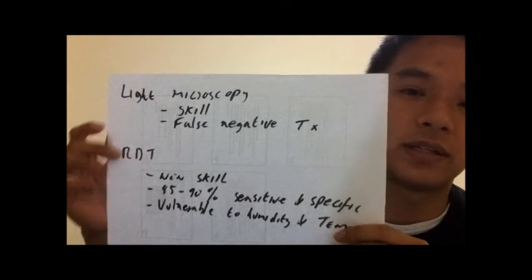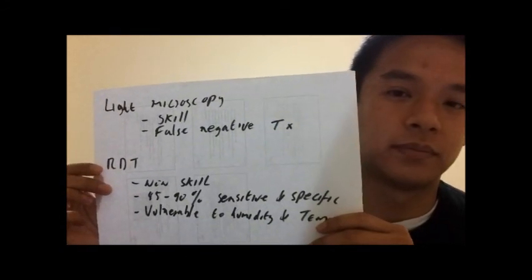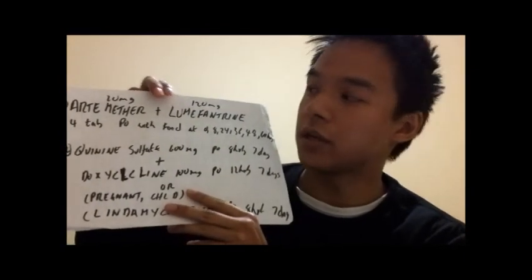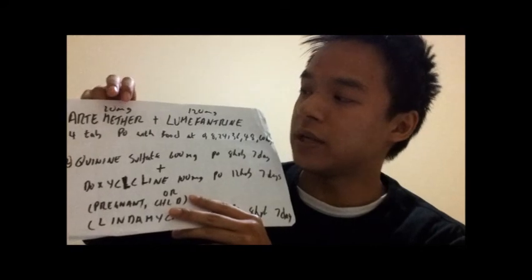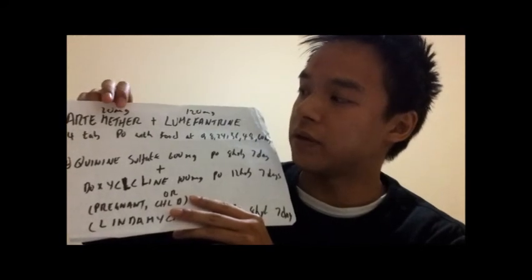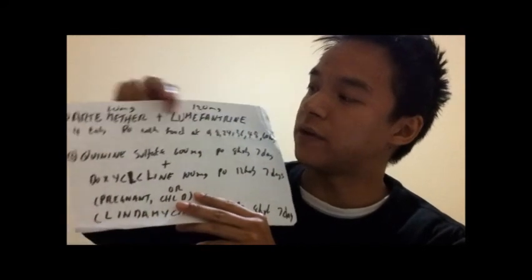Those are the two diagnostic tests you need to know about for malaria. Now I'm going to discuss the treatment of P. falciparum. If it's causing an uncomplicated malarial infection, we can treat orally with the combination anti-malarials of artemether plus lumefantrine, which is our first-line treatment.